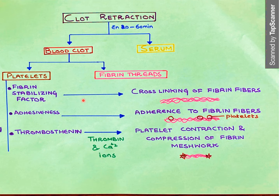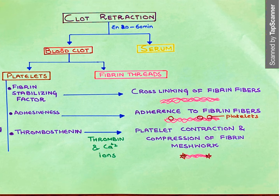Now let's talk about clot retraction. The stable fibrin clot is going to contract and get smaller in size. When it becomes smaller, on one side you see the fibrin clot and on the other side a yellowish fluid comes out — this is plasma minus the clotting factors. Whatever fibrinogen was present is now in the clot. Platelets, WBCs, and clotting factors used up are present in the clot. The plasma devoid of these clotting factors and fibrinogen is called serum.